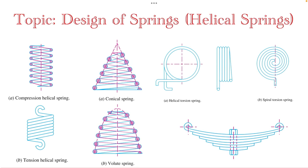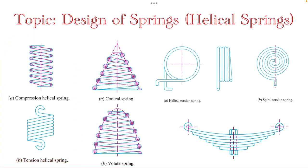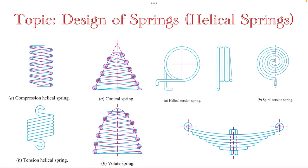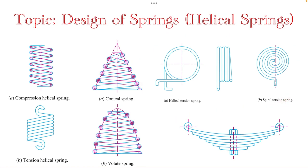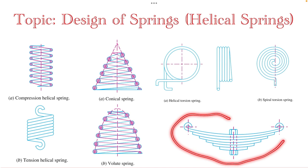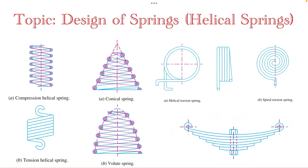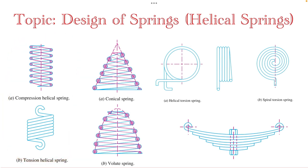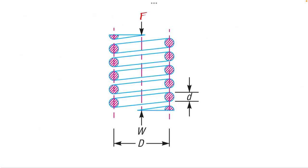Here you can see the different types of springs based on shape. There are helical compression springs and helical tension springs, also known as open coil and close coil. Conical or volute spacing springs have a differential spring rate. There are also helical torsion springs, spiral torsion springs, and the leaf spring used in the suspension systems of heavy vehicles. Our design and analysis is focused on helical springs.